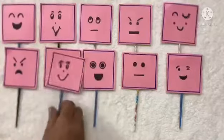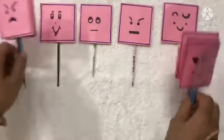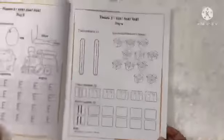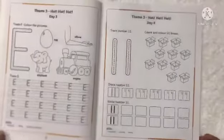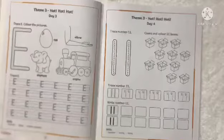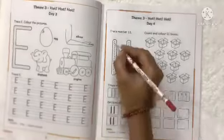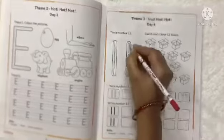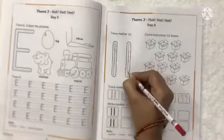Now, after counting these squares, we will write number 11 in our theme 3 book page number 5. Trace number 11. Now, we will trace number 11 like this.